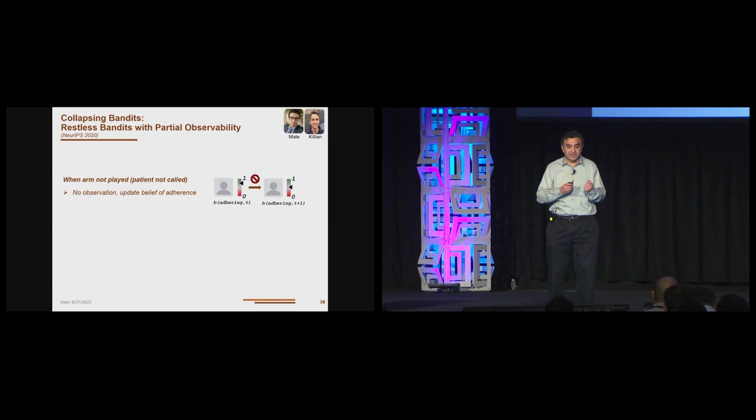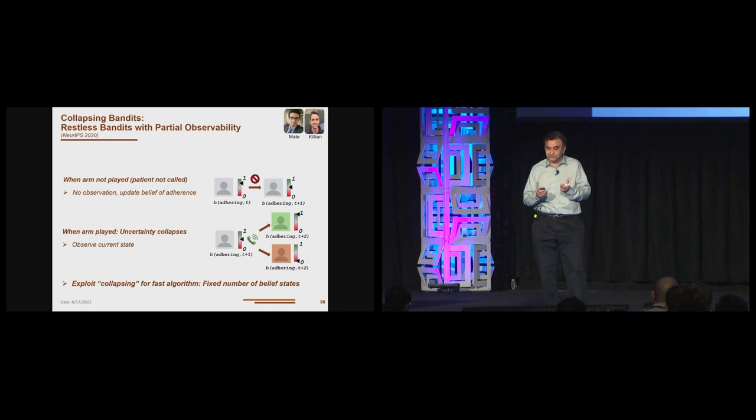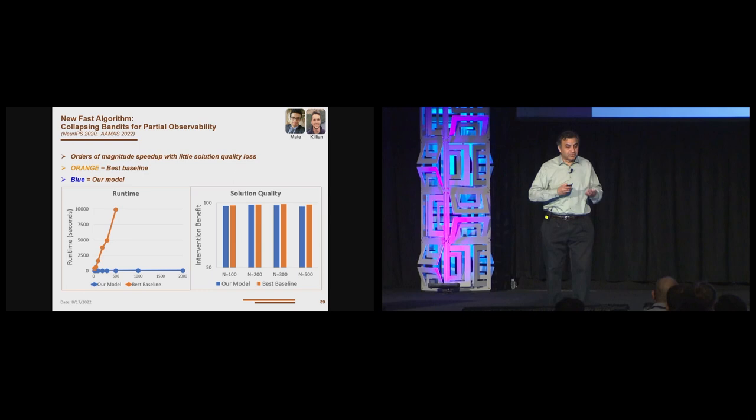This is similar to the maternal and child care problem I just showed, except the state of the patient is not known in advance. So basically this is a challenge of partial observability. Each arm now is a POMDP. To solve this problem, we present a model called collapsing bandits in NeurIPS 20. Basically, when an arm is not called, we have a belief state that gets updated. But when an arm is called, when we give a service call, now the state of the patient gets revealed. The patient says I took my medicine last night, the state is known. Uncertainty collapses. This collapsing nature turns out to be crucial for fast algorithms and providing guarantees for indexability.